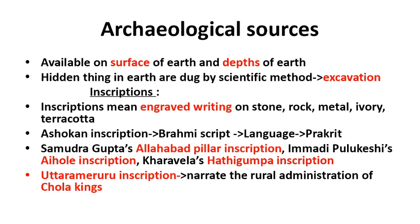Archaeological sources are available on the surface of the earth and in the depths of the earth. Those present under the earth are removed by the scientific method called excavation. Archaeological sources are divided into four important types: inscriptions, coins, monuments and other buildings, and other ruins.